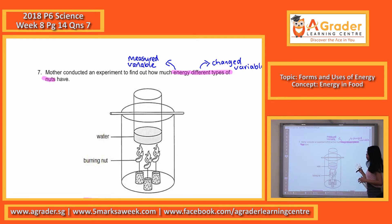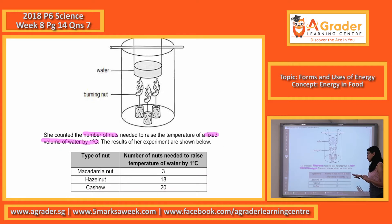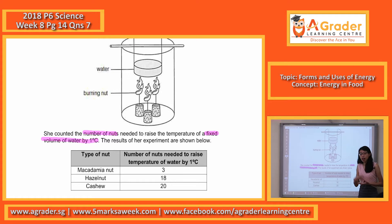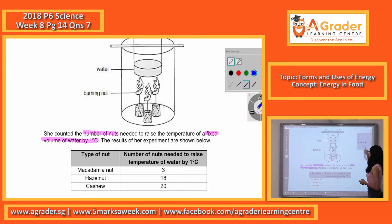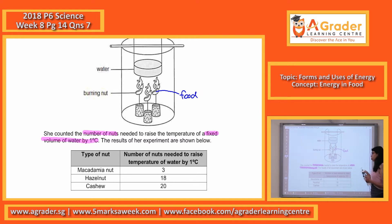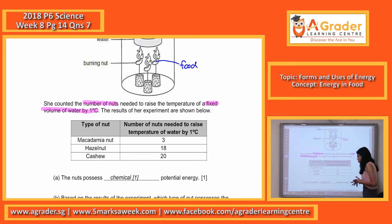After identifying these two variables, let's move on to the next part. This is the number of nuts needed by different types to raise the temperature of water by 1 degree Celsius. The question is asking what kind of energy these nuts possess. Please take note — nut is food, and food possesses chemical potential energy. So these nuts possess chemical potential energy.